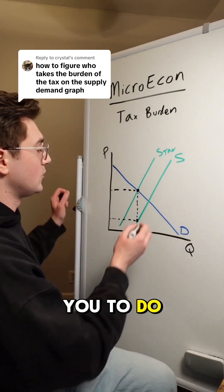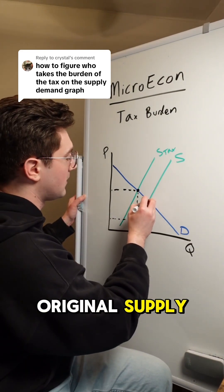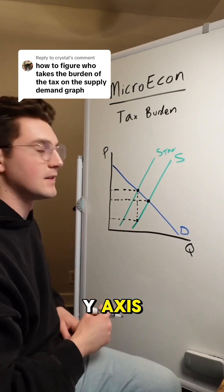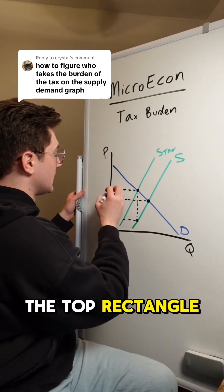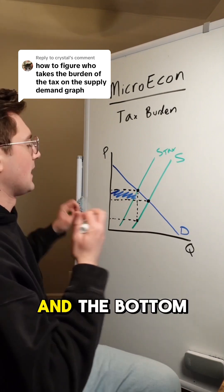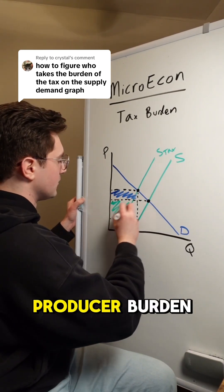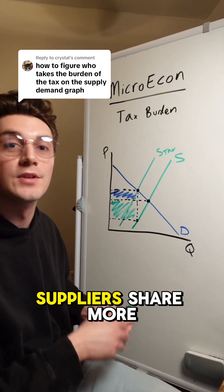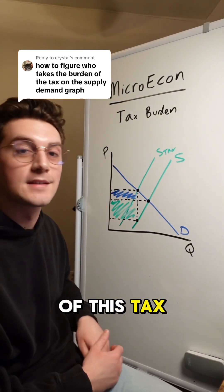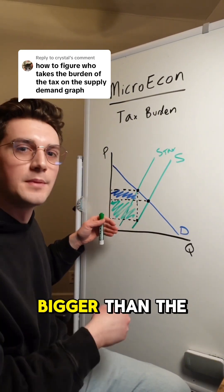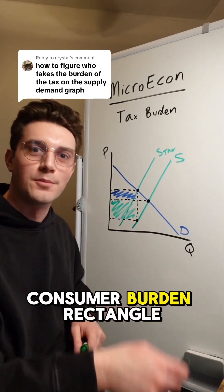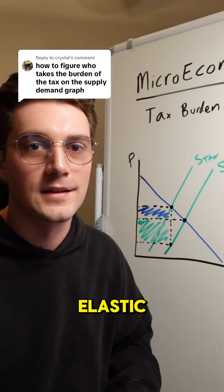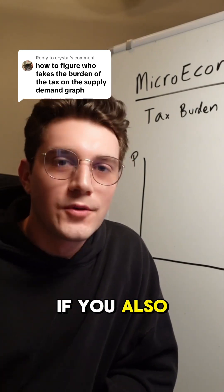To determine the burden, pinpoint that original supply and demand point intersection and then go horizontal to the y-axis. The top rectangle is the consumer burden and the bottom rectangle is the producer burden. As we said, the more inelastic party — here, suppliers — shares more of the burden of this tax. Their green rectangle is a little bigger than the blue consumer burden rectangle. Let's do another example, except make the demand curve more inelastic.